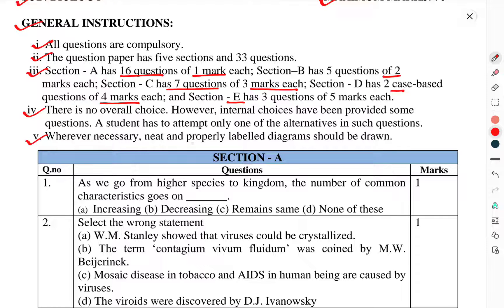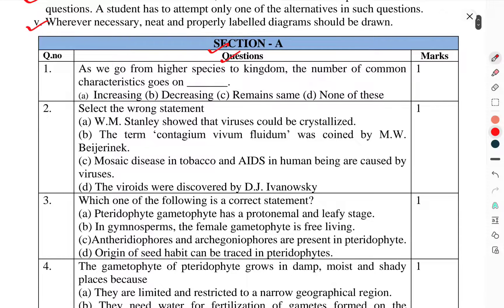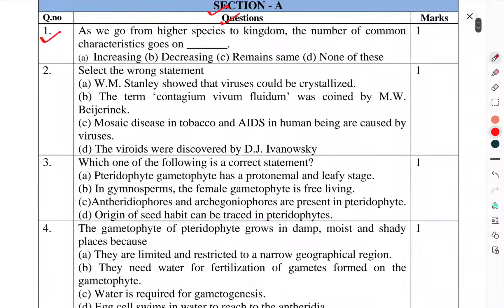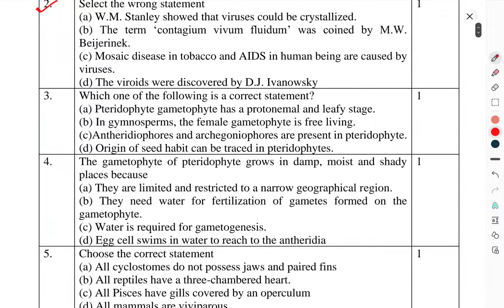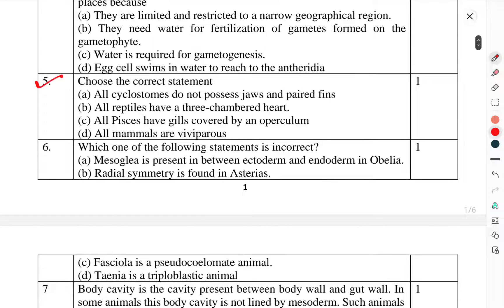Section A questions. Question 1: As we go from higher species to kingdom, the number of common characteristics goes on? Question 2: Select the wrong statement. Question 3: Which one of the following is a correct statement? Question 4: The gametophyte in pteridophytes grows in damp, moist, and shady places because? Question 5: Choose the correct statement.